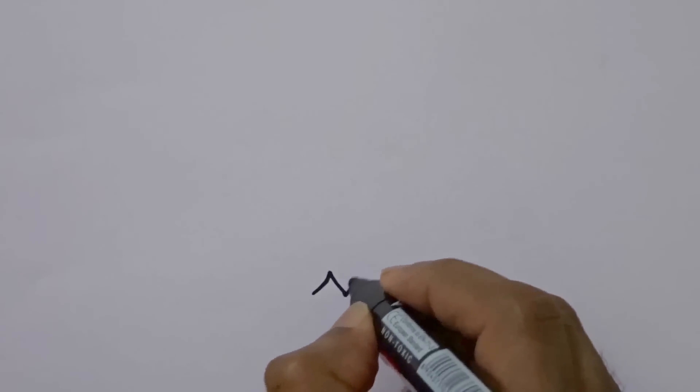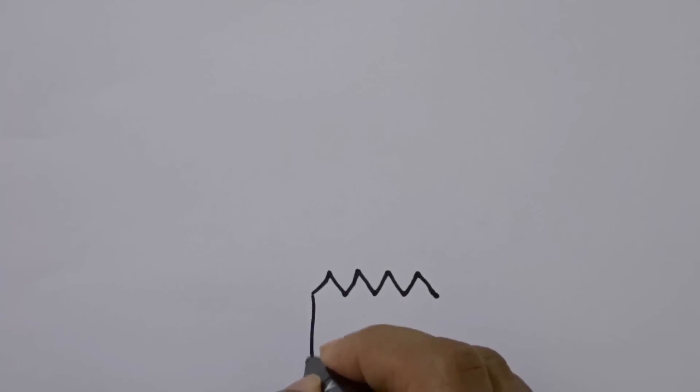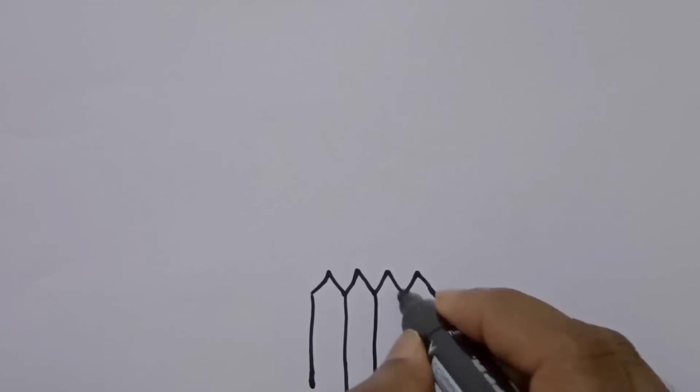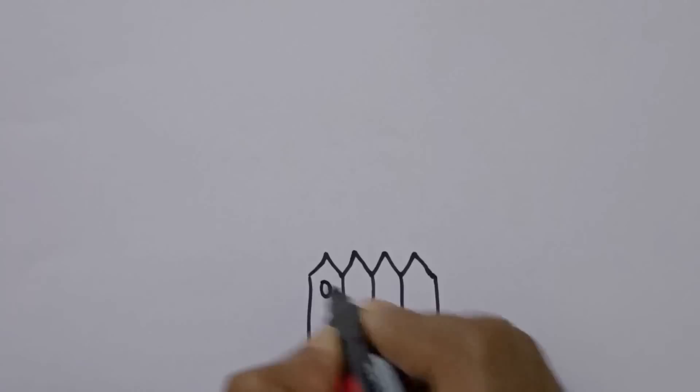Draw a pointed mountain shape like this and continue with three more. Draw a vertical line down and do the same with the others. Now draw a circle on top in each part of the fence.